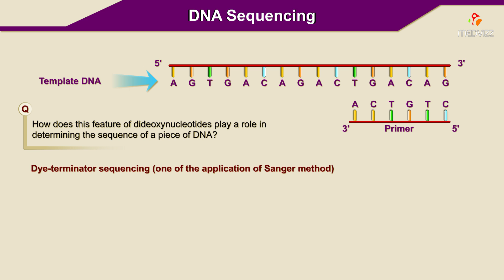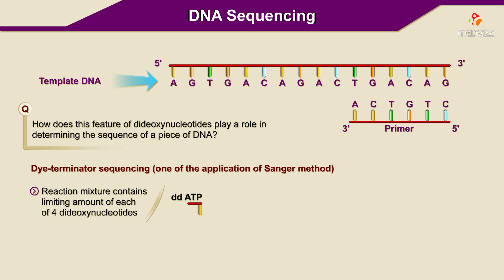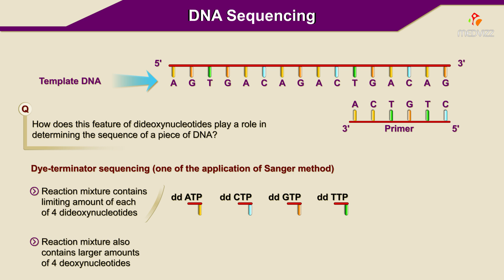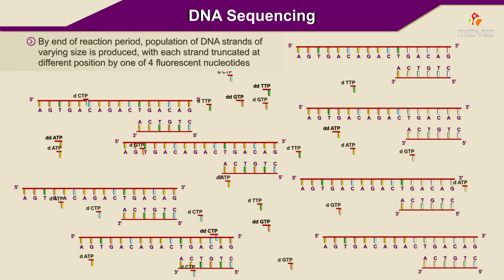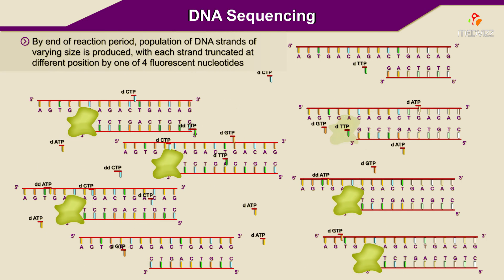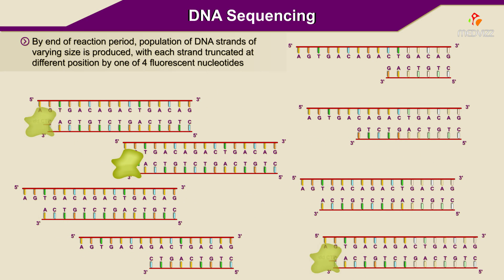In one application of the Sanger method called dye terminator sequencing, the reaction mixture contains a limiting amount of each of the four dideoxynucleotides: ddATP, ddCTP, ddGTP, and ddTTP. These dideoxynucleotides are labeled with four different fluorescent dyes. The reaction mixture also contains larger amounts of the four deoxynucleotides and the enzyme DNA polymerase I. By the end of the reaction period, a population of DNA strands of varying size is produced, with each strand truncated at a different position by one of the four fluorescent nucleotides.